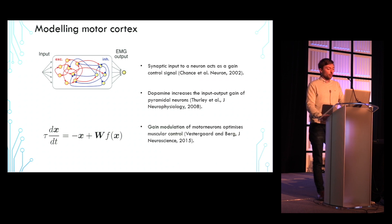Indeed, we also know that inputs from the cerebellum or neuromodulators such as dopamine could cause such changes in neuronal responsiveness. And gain modulation of motor neurons has been linked experimentally to optimization of muscular control. We therefore wanted to study the effects of gain modulation in recurrent cortical motor circuits.